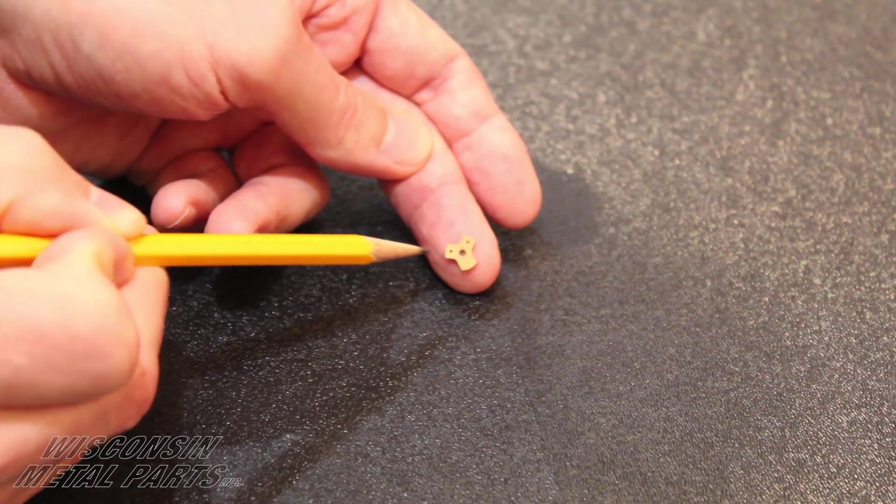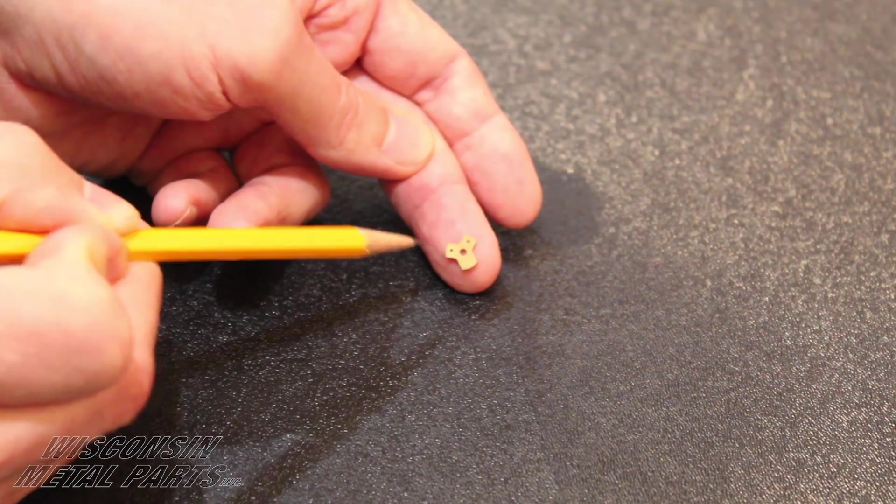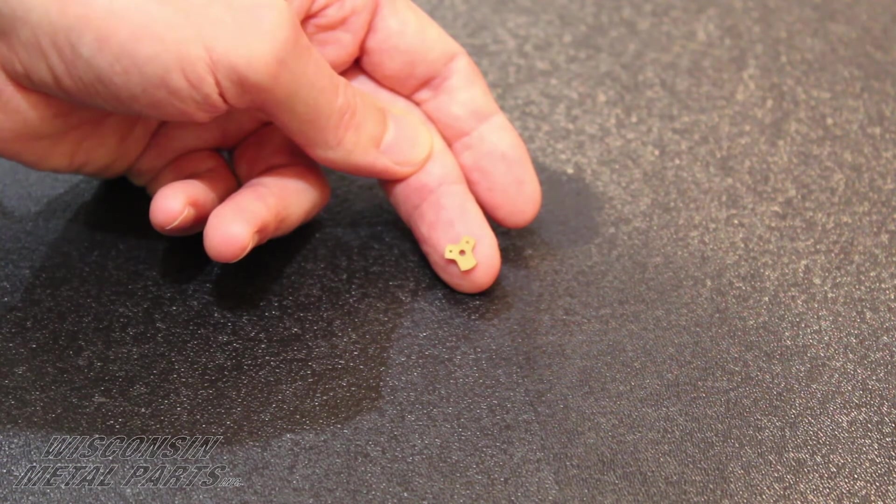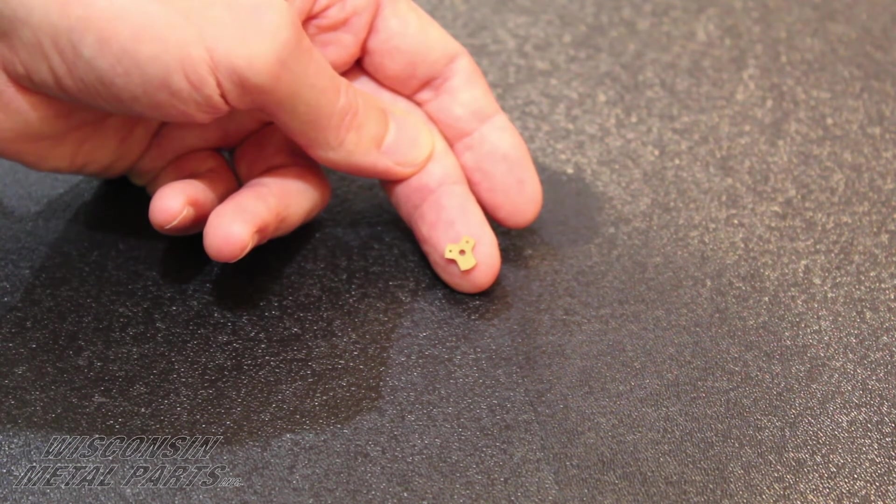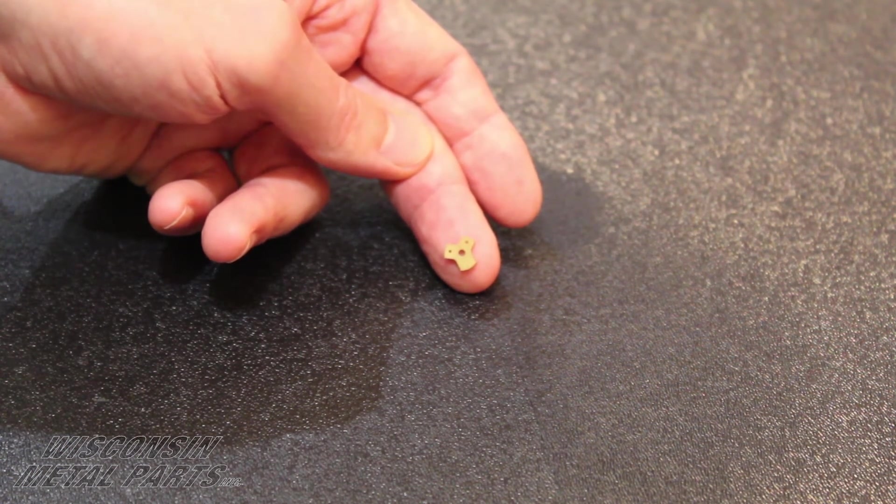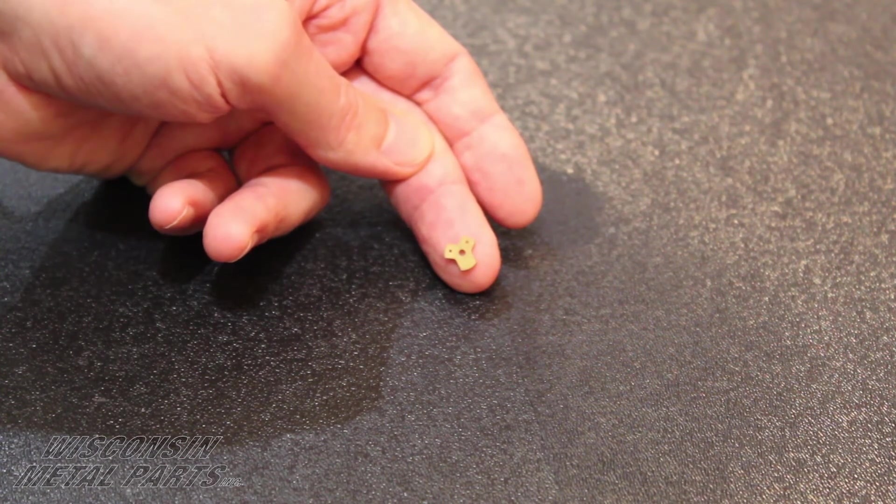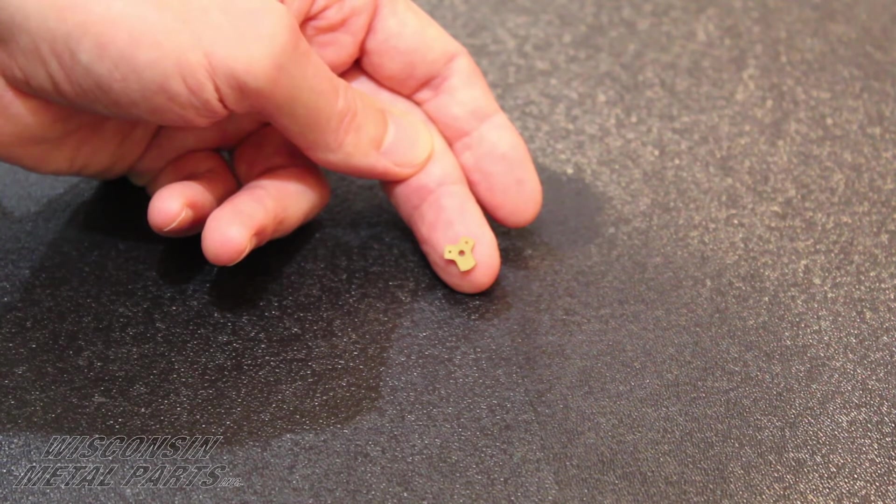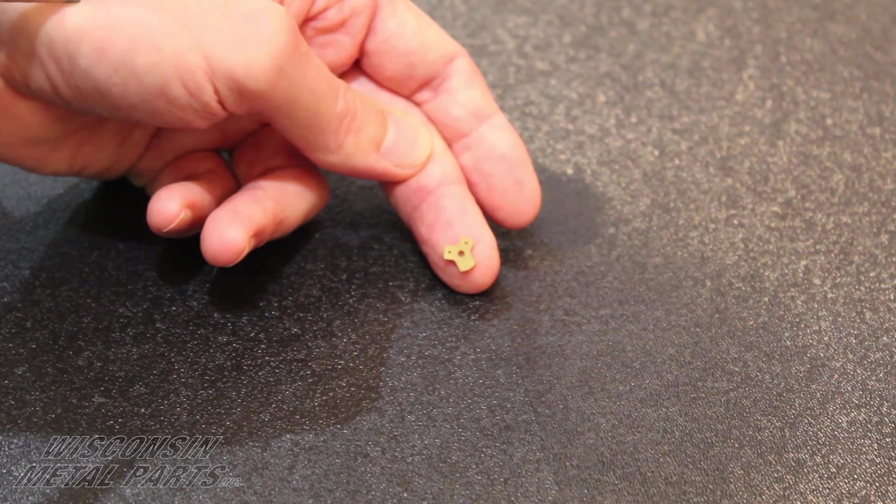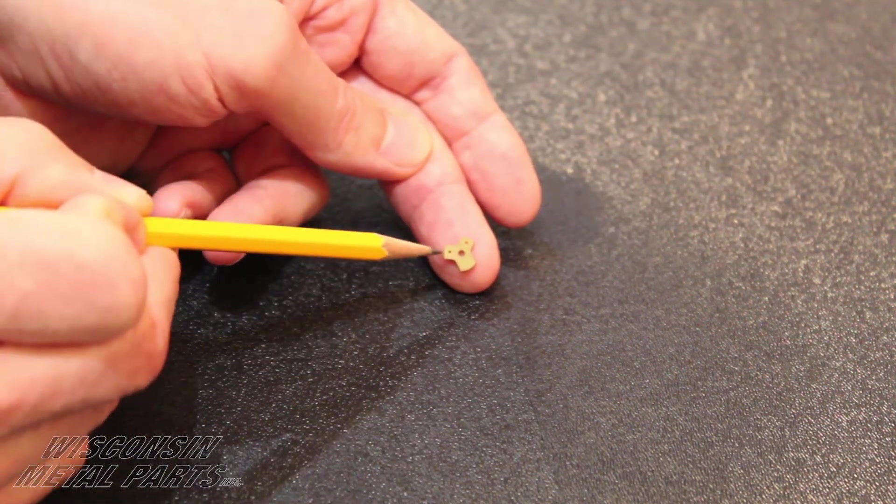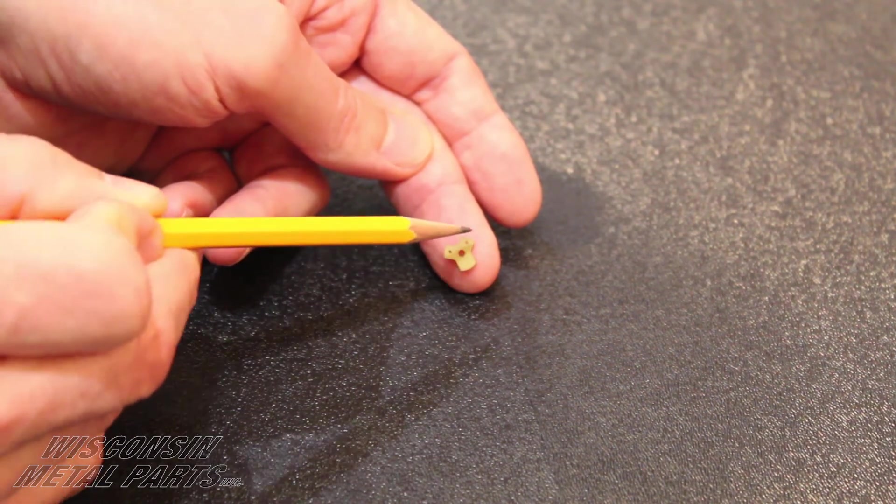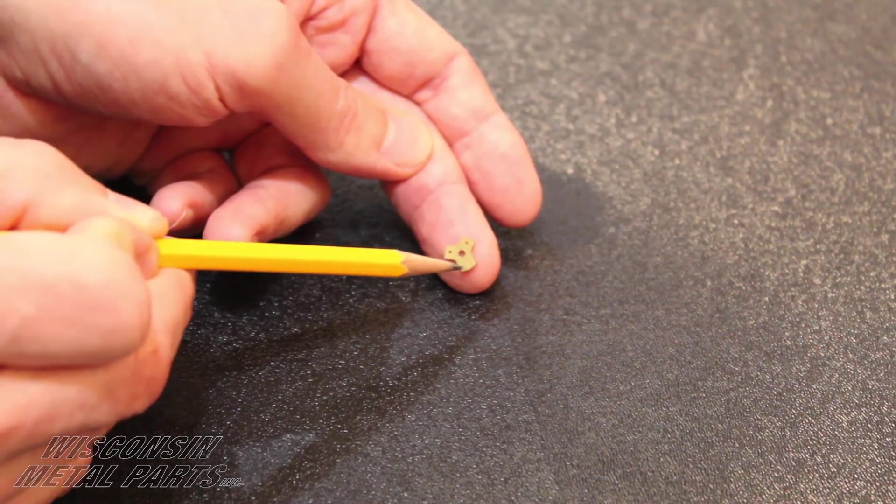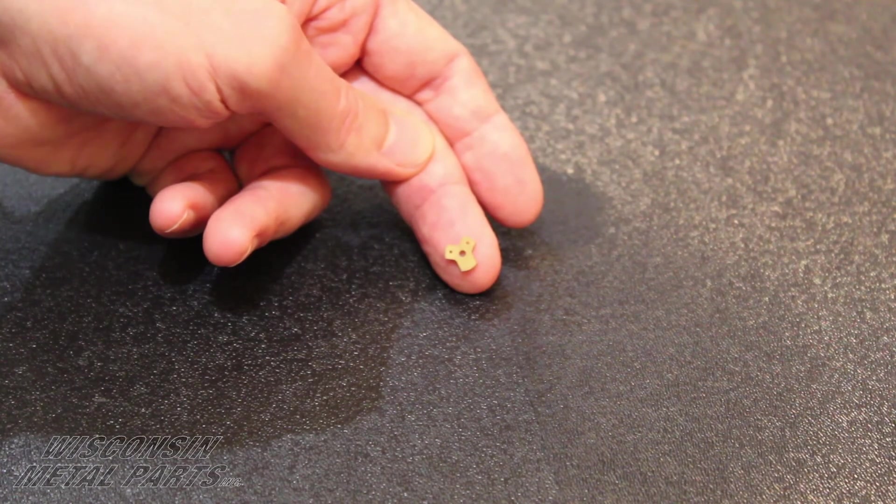In this case this runs in a progressive stamping die that we designed and built here. There's also a checking gauge that we have designed and built that checks the function of this part and we also are able to put this into our vision system which comes down and does a very strong magnification checking hole locations and sizes versus a model.